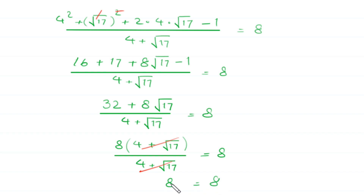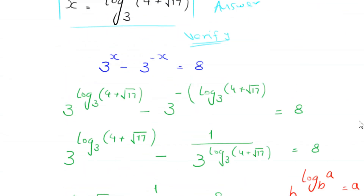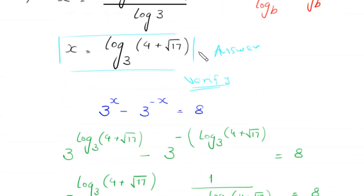Left hand side is equal to the right hand side, so this value of x, log base 3 of 4 plus root 17, is a valid solution.